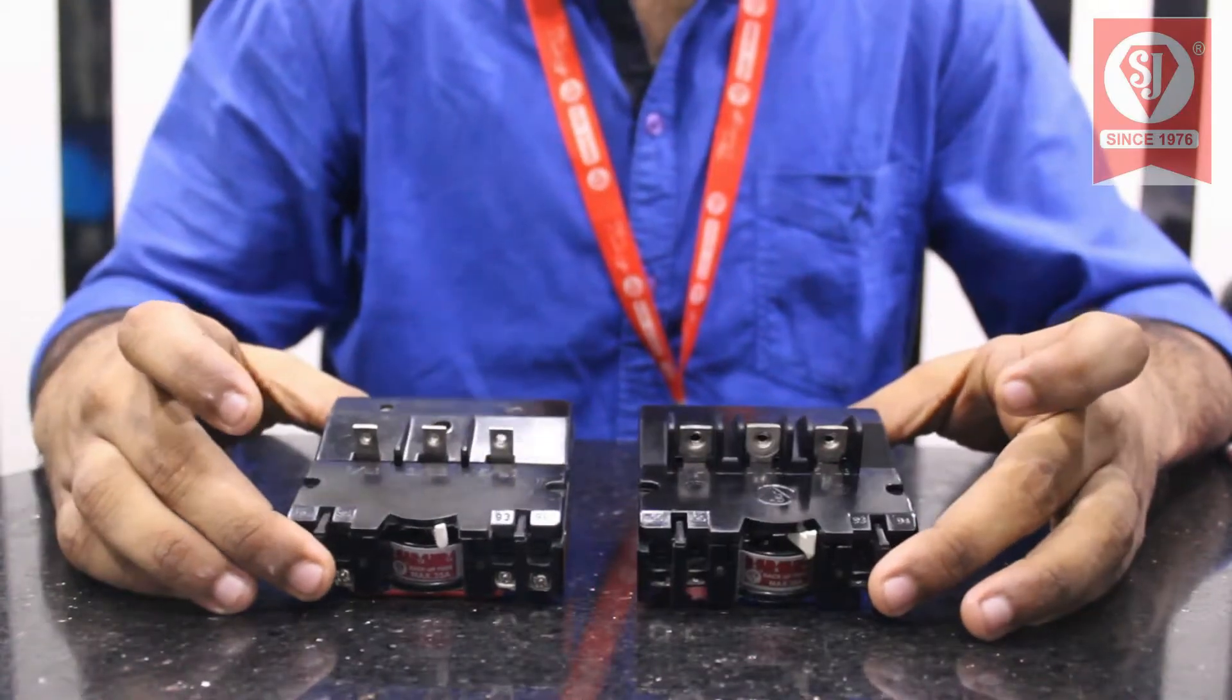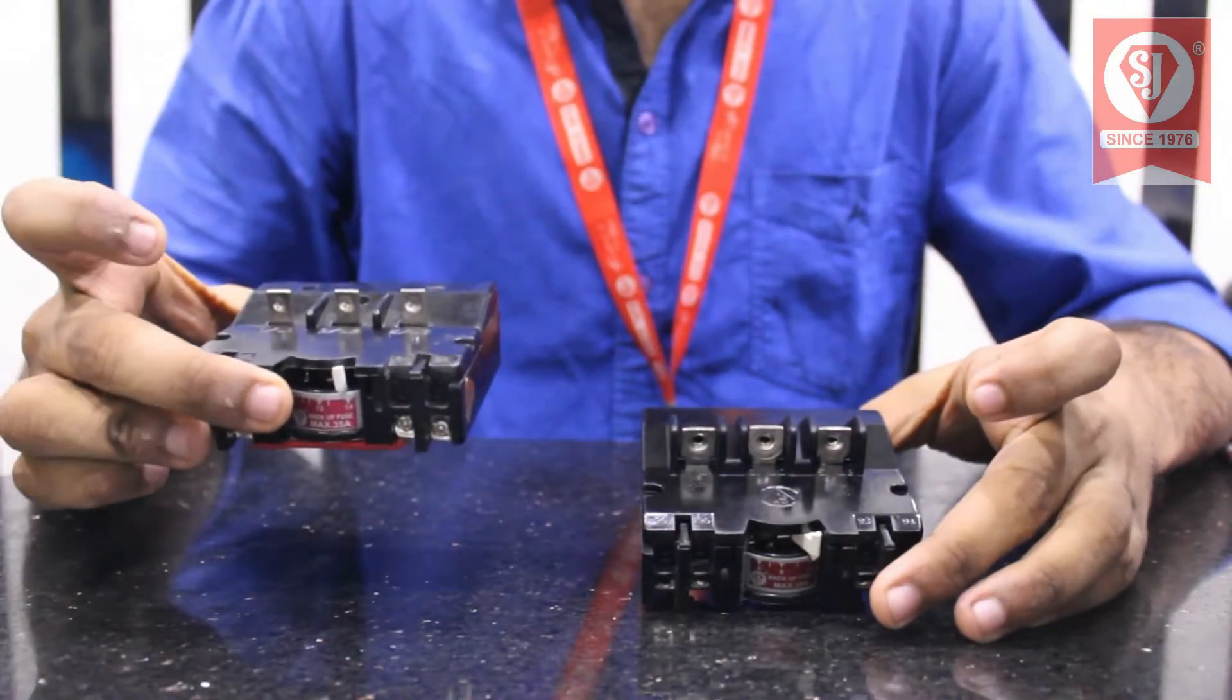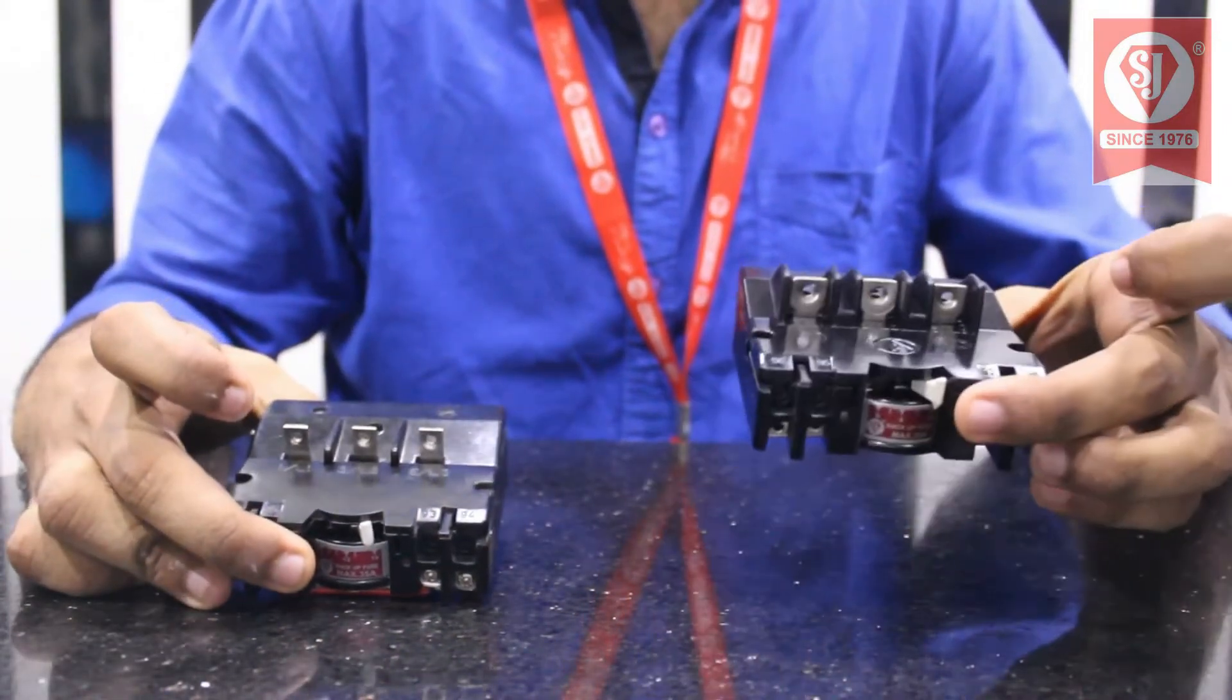This is the relay cover for both relays. At my right side is the MJ1. At my left side is the MJ1 plus.